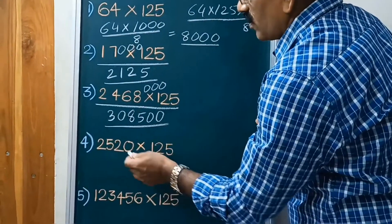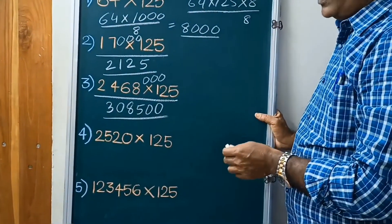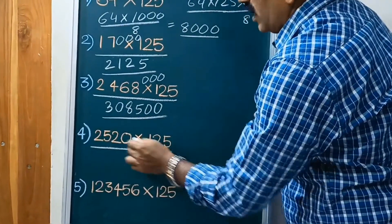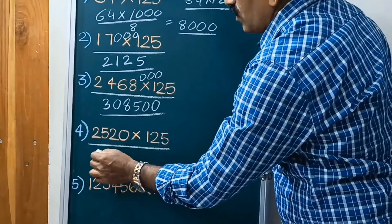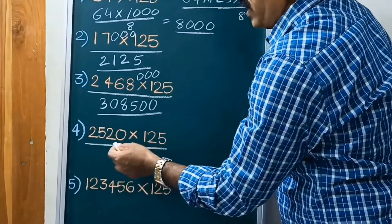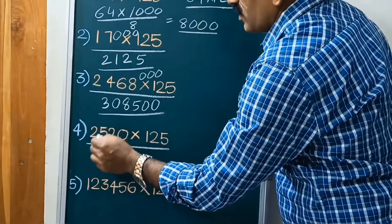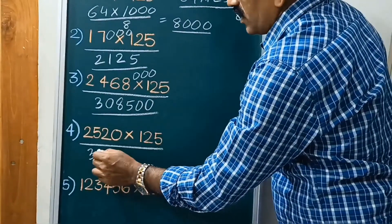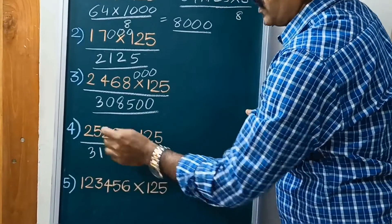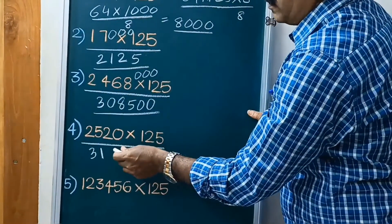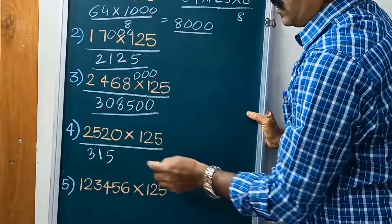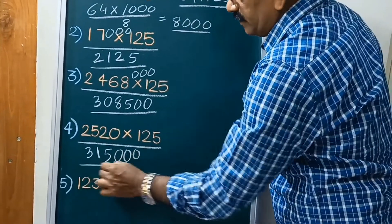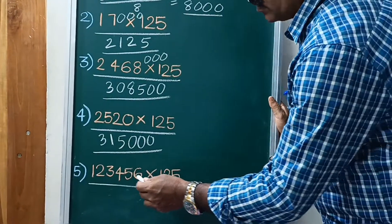2520 into 125. Divided by 8, 2, divided by 8, 8 threes are 24, 8 ones are 8, remainder 4, 8 fives are 40, put it 3 zeros.